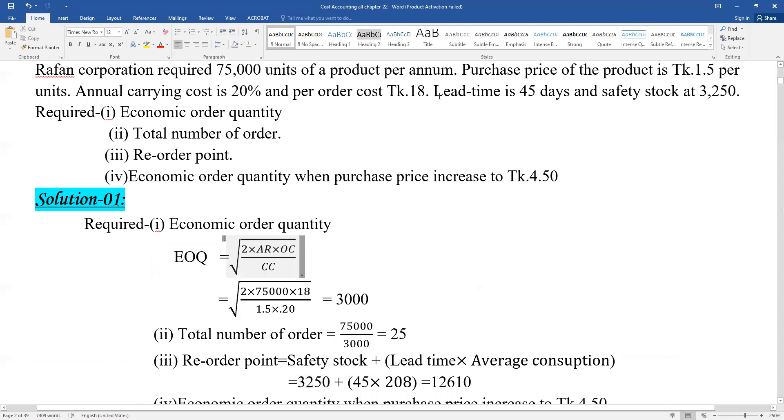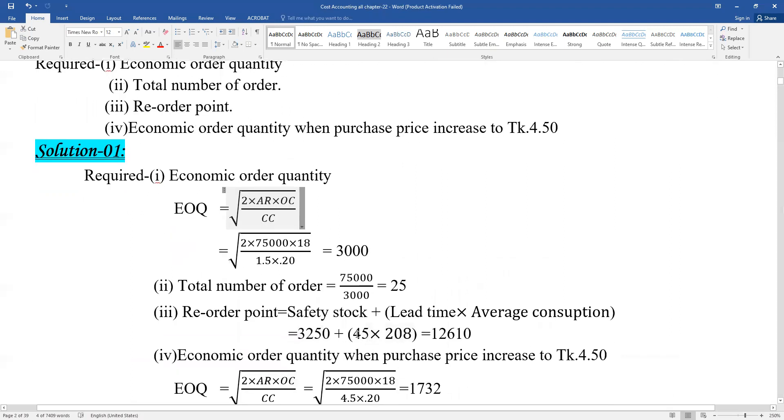Lead time is 45 days. We need to multiply lead time by average daily consumption to get the reorder point.